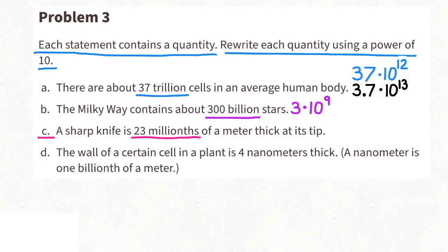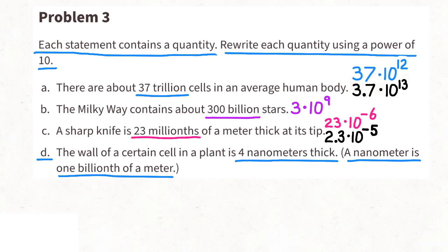C: a sharp knife is 23 millionths of a meter thick at its tip. We can rewrite 23 millionths as 23 times 10 to the power of negative 6, or in scientific notation as 2.3 times 10 to the power of negative 5. D: the wall of a certain plant cell is four nanometers thick, and a nanometer is one billionth of a meter. We can write that as 4 times 10 to the power of negative 9, which is also already in scientific notation.